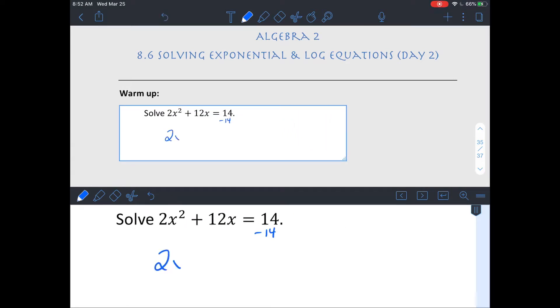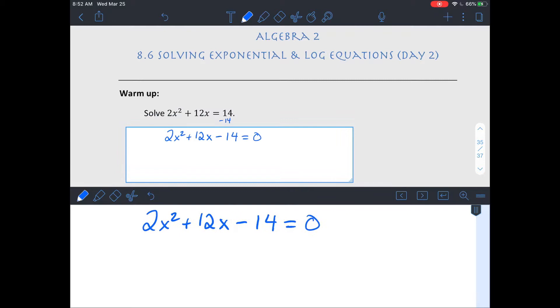If you have x squared and x, one option is to get 0 on one side and then either factor or use quadratic formula. I'm gonna factor out a 2, which will leave you with x squared plus 6x minus 7. And then I'm gonna try and factor it. So I need two numbers that multiply to 1 times negative 7, so multiply to negative 7 and add up to 6.